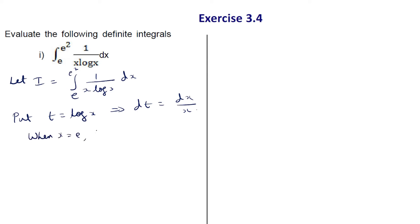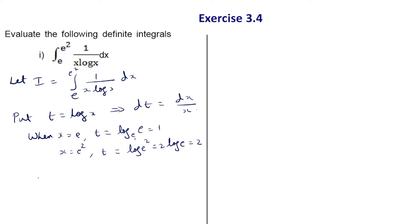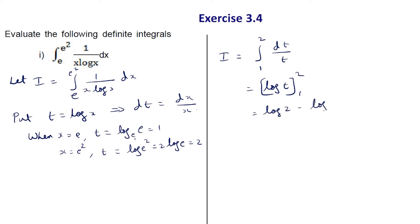When x = e, t = log e. We know that log e = 1. When x = e², t = log e² = 2 log e = 2. So when x = e, t = 1, and when x = e², t = 2. The given integral becomes i = ∫(1 to 2) dt/t. This is log t with limits 1 to 2. Substituting: log 2 − log 1. Since log 1 = 0, the value of the given definite integral is log 2.